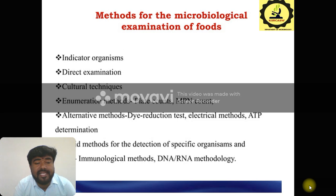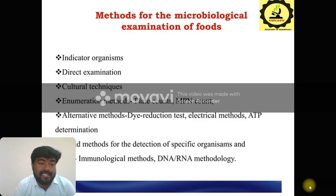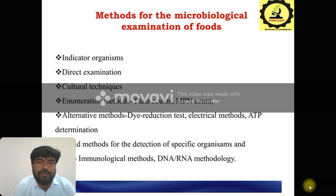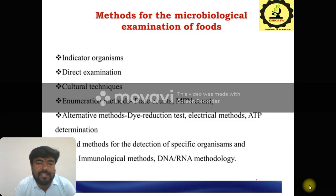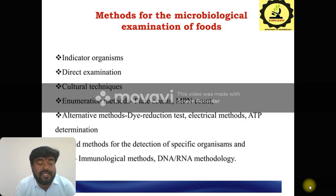What are the methods of microbiological examination of foods? Especially indicator organisms — indicators mean organisms that indicate contamination. Especially direct examination and cultural techniques. Directly you can view your food sources and observe the surface. Cultural techniques include performing pour plate and spread plate methods, and you can identify organisms using biochemical reagents. Then enumeration methods — plate counts and MPN (Most Probable Number) present in an organism. Then alternative methods: dye reduction techniques, electrical methods, ATP determination, immunological methods, and DNA or RNA methodology.